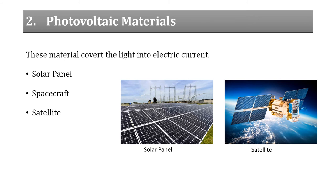The next type of smart material is photovoltaic material. These materials have similar properties to piezoelectric materials, but they convert light into electric energy. For example, in a solar panel, sunlight is converted into electric energy by photovoltaic material. These materials are also used in spacecraft and satellites.